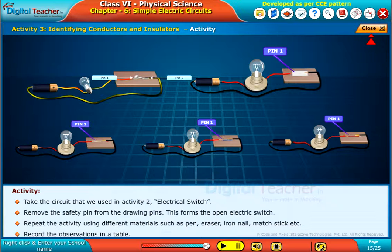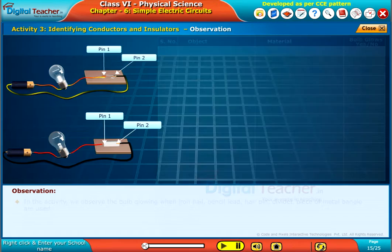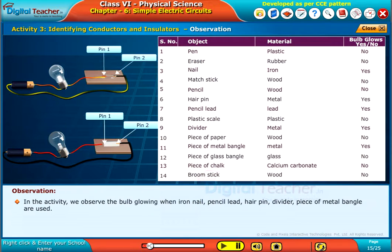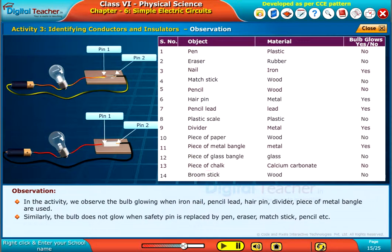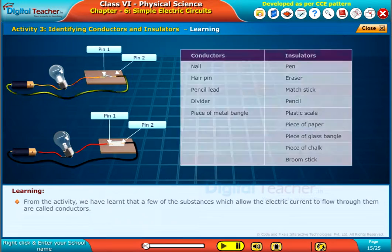In the activity, we observe the bulb glowing when iron nail, pencil lead, hairpin, divider, and piece of metal bangle are used. Similarly, the bulb does not glow when the safety pin is replaced by pen, eraser, matchstick, pencil, etc.